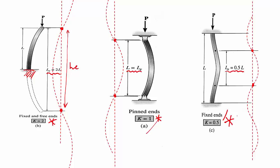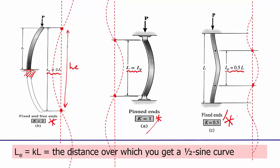Thus another way I like to define the effective length is to consider it as being the distance over which you get a half sine curve when you look at the buckled shape.